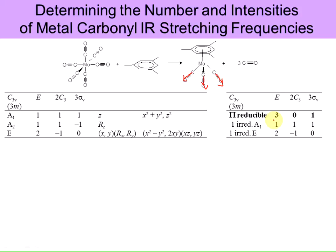This is a fairly simple reducible representation. Looking at the character table, the E and A1 irreducible representations add up to give the reducible representation: 2+1=3, −1+1=0, 0+1=1. If you can't do that by inspection, you can factor out the irreducible representations from the reducible representation as done in previous slides. The result is one A1, no A2, and one E.